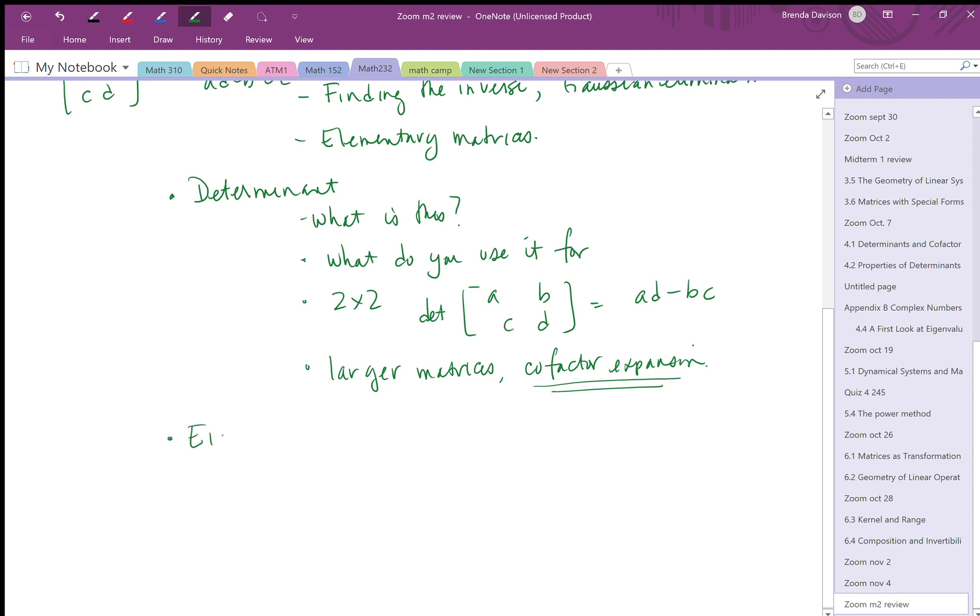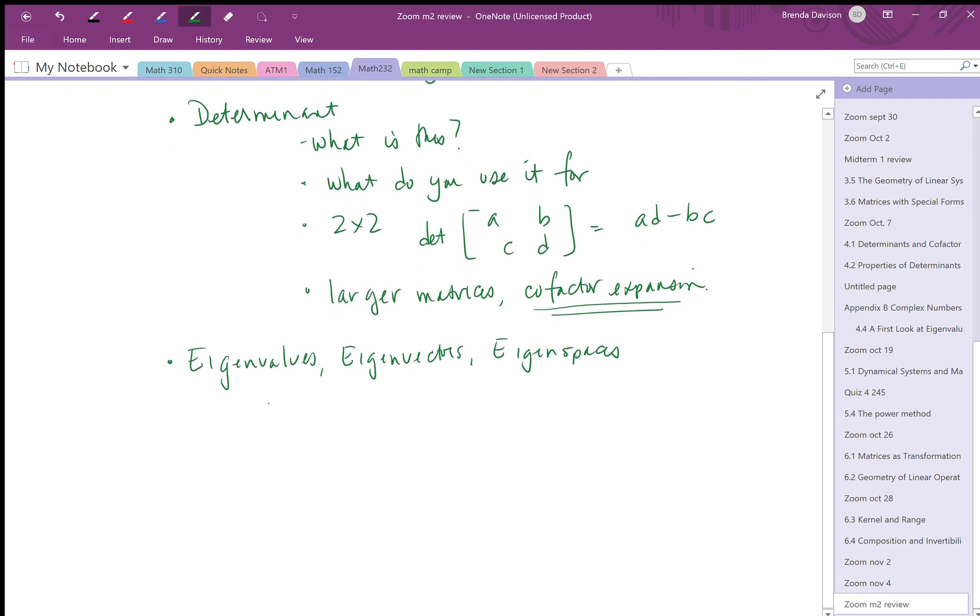Eigenvalues are clearly a major topic: eigenvalues, eigenvectors, eigenspaces. What are these things? How do you calculate them? We have this thing lambda I minus A, and Ax equals lambda x. What do they tell you about the matrix? There's a computation of these things and understanding what they're about.